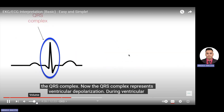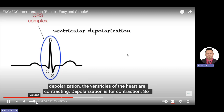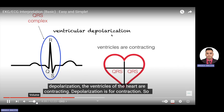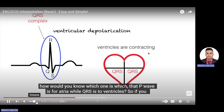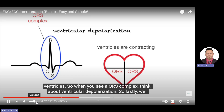Next, the QRS complex represents ventricular depolarization — during ventricular depolarization, the ventricles of the heart are contracting. Depolarization is for contraction. To remember which is which: the P wave is for the atria, while QRS is for the ventricles. Looking at the diagram, the QRS complex looks kind of like an inverted V — so V for ventricles. When you see a QRS complex, think ventricular depolarization.